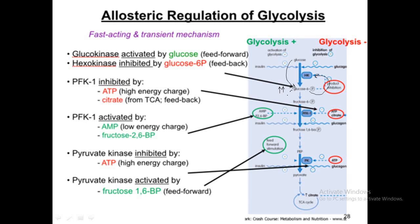Now for an example of feed-forward: glucose-6-phosphate gets converted into fructose-6-phosphate, and fructose-6-phosphate gets converted into fructose-2,6-bisphosphate. Only when there is a high concentration of fructose-6-phosphate does fructose-2,6-bisphosphate form via PFK2. This fructose-2,6-bisphosphate is an allosteric activator of PFK1.